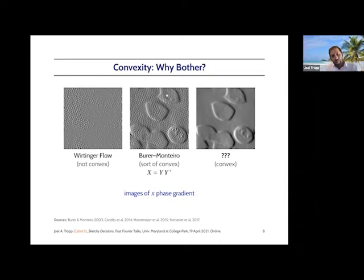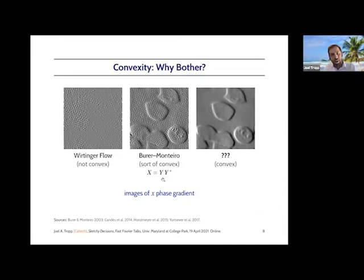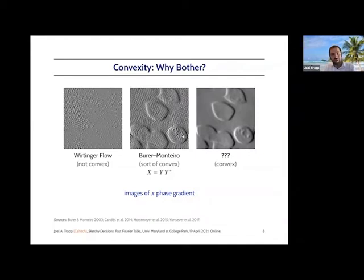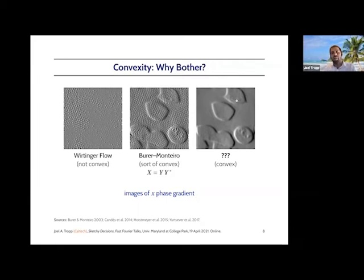You might think: I know something about solving semidefinite programs — I'm going to use the Burer-Monteiro method, which replaces the matrix variable by a factorized form YY transpose, where Y is a tall matrix, maybe rank 2 or rank 10 or rank 100 or something like that, and then solve that nonlinear program over the matrix variable Y. That sort of works — you get an okay image, but there's a lot of background variability, so it's hard to tell whether inside the cells are malaria parasites or ringing artifacts from a poor solution. What I really want is an image where the phase is accurate enough that the phase gradients give a reasonable image with low background variation, where I can really see the locations of the cells and the parasites. But conventional wisdom is that we can't solve these kinds of optimization problems — they're too hard.